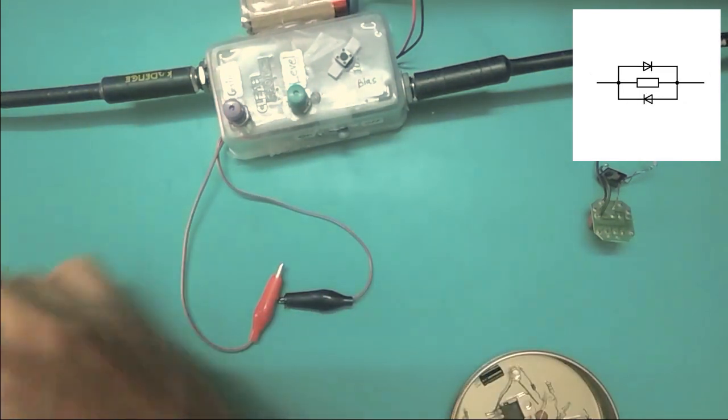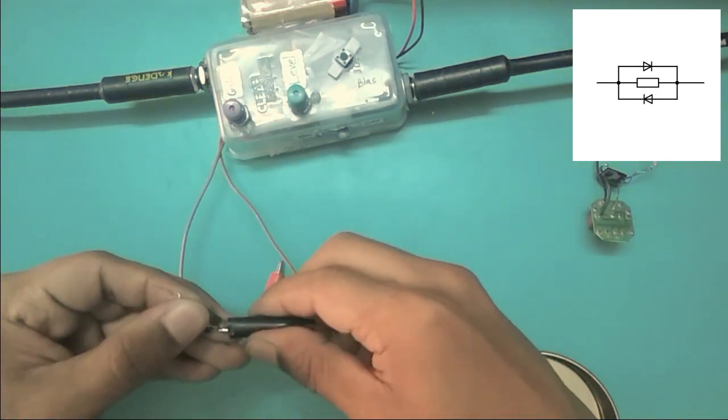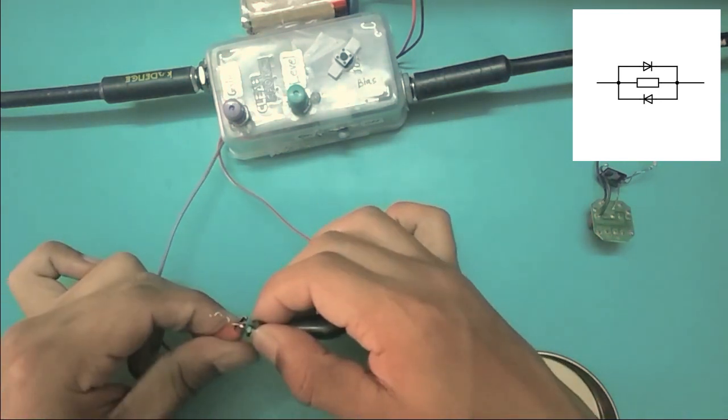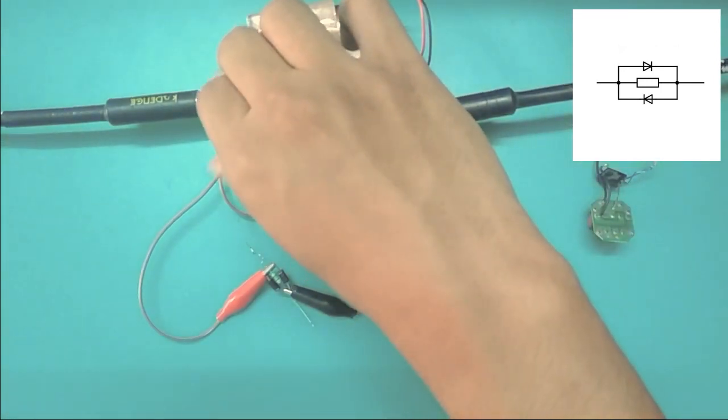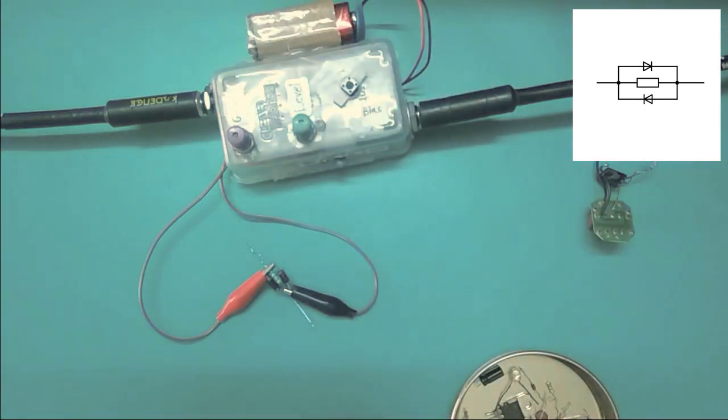So next, two germanium diodes in opposite directions with one resistor in parallel with both of them. And this definitely sounds like a crunch or overdrive.